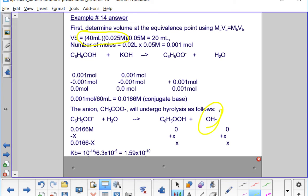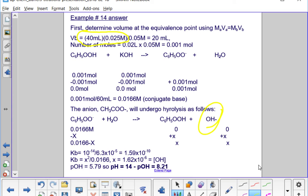So 1 times 10 to the minus 14th over 6.3 times 10 to the minus 5 gives me a KB of 1.59 times 10 to the minus 10th. Then I can sub that into a KB expression. That is the concentration of my two products, X times X or X squared over the concentration of my reactant, 0.0166. Solve for X or the hydroxide ion concentration. Take the negative log of that to get the pOH, then subtract from 14 to get the pH, 8.21.